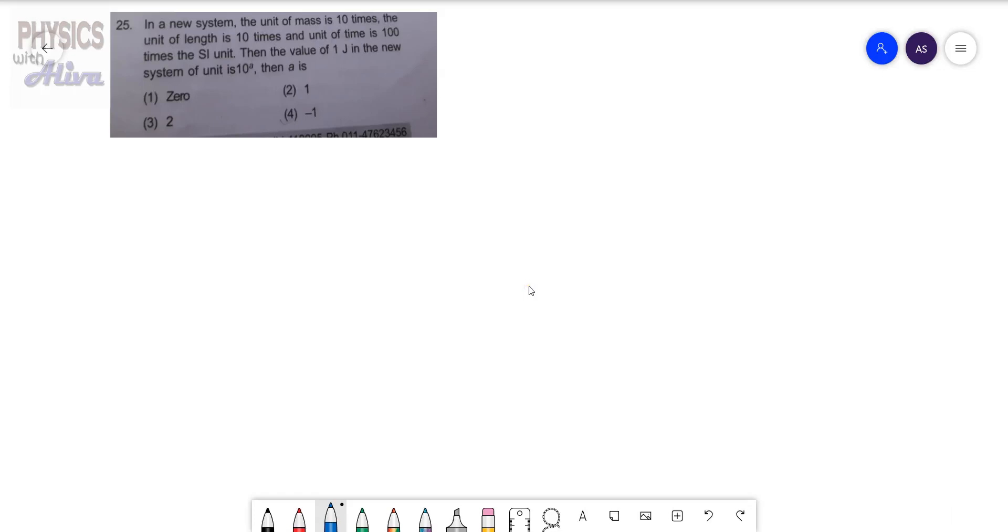Hello students, my name is Oliva and this is your YouTube channel Physics with Oliva. Today we are going to discuss another problem from the chapter Unit and Dimension. Let's start. At first, read the problem: In a new system, the unit of mass is 10 times, the unit of length is 10 times, and the unit of time is 100 times the SI unit.